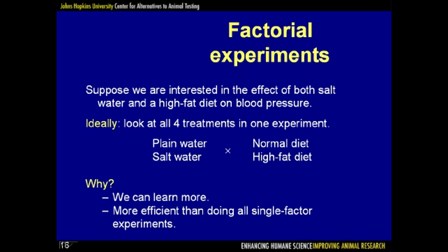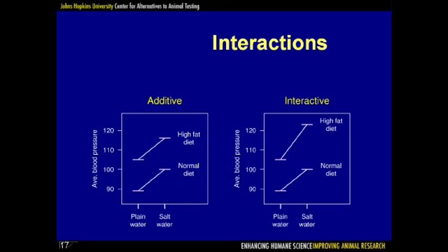The last major principle is factorial experiments. Suppose we are interested in both the effects of salt water and high-fat diet on blood pressure. Ideally, we would look at all four possible treatments in one experiment: plain water with normal diet, plain water with high-fat diet, salt water with normal diet, and salt water with high-fat diet. There are two reasons to prefer this super-experiment over two separate experiments: we can learn more, and we can actually get more precise results from the factorial experiment.